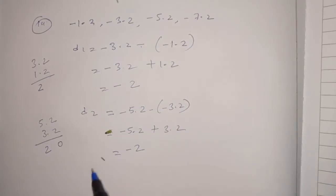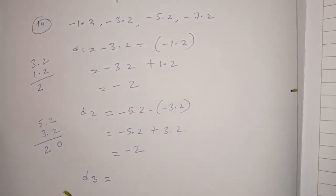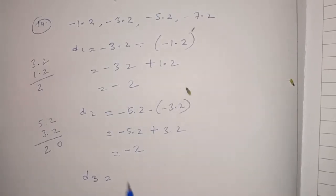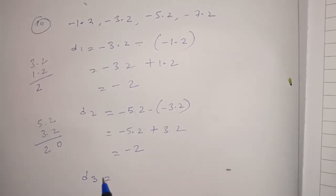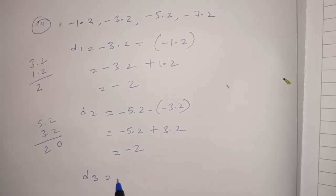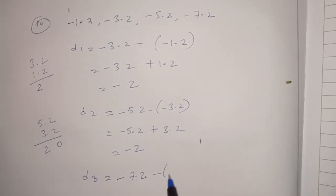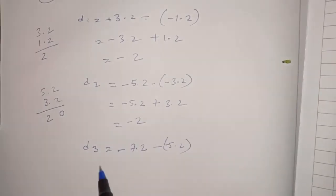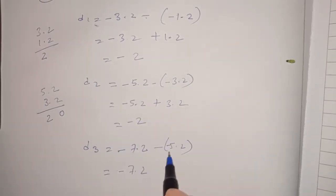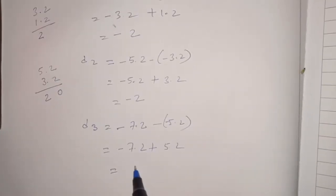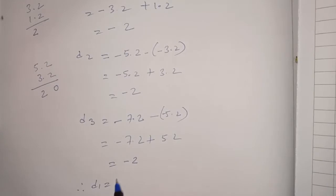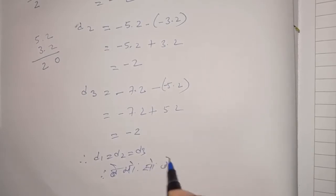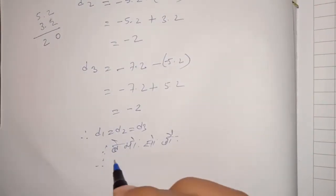D3 equal to minus 7.2 minus minus 5.2 equal to minus 7.2 plus 5.2 equal to minus 2. Therefore D1 equal to D2 equal to D3. Therefore this is an AP with common difference minus 2.